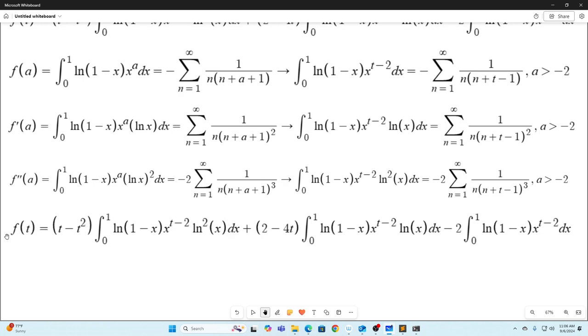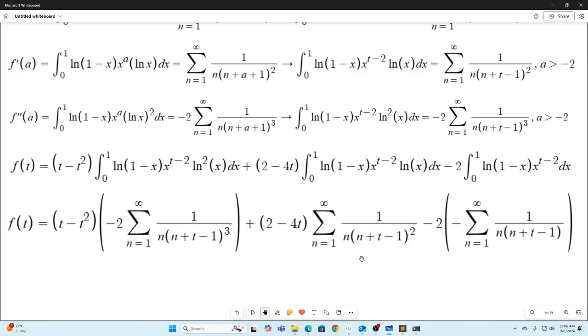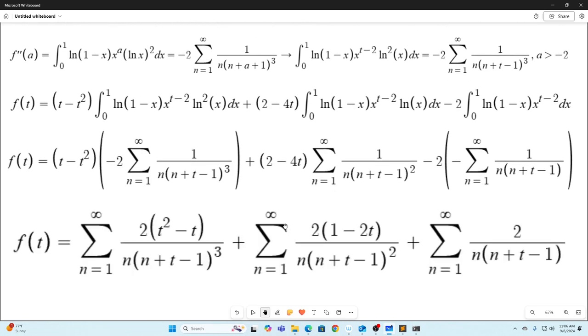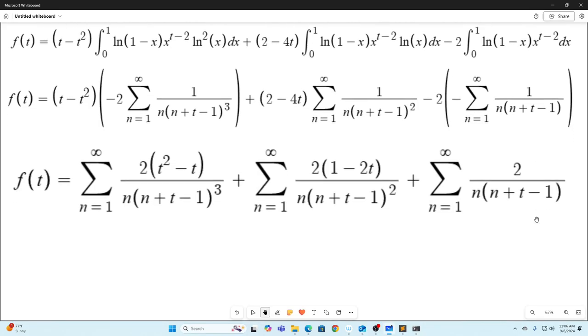So now remember our original F of T was this, and we can replace this integral with this sum. Likewise, we can replace this integral right here with this sum, and we can replace this integral right here with this sum. And if we do that, this is what we end up with. I literally just replaced all the integrals with their sums. And now I just do a little bit of simplification. You can see, I got rid of that negative sign. I brought the two inside. I brought this T minus T squared inside and flipped it around to get rid of the negative sign. And then I did the same thing over here. I just brought this inside, factored out a two. Again, I canceled these two negative signs and brought in the two. That's no mystery there. That's pretty easy.